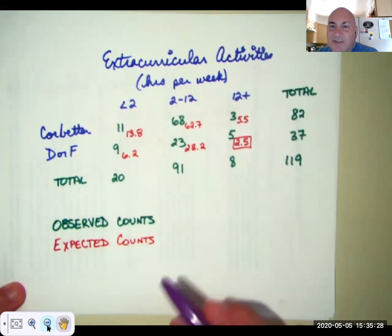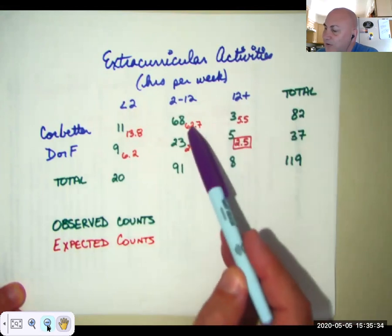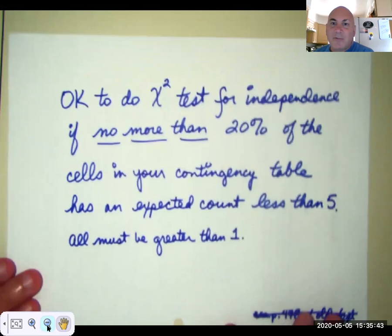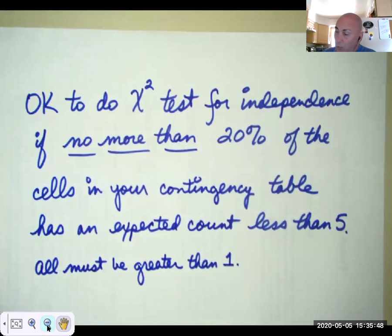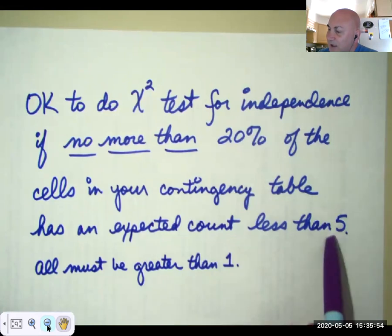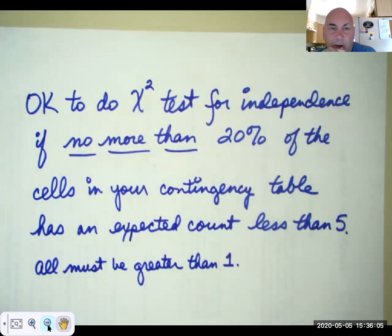Now that you can see that works, you can apply the row total times column total divided by total total formula to get all the other expected values. It's okay to do the chi-squared test for independence if no more than one out of five cells in your contingency table has an expected value less than five, and they're all greater than one. This is one of those rules of thumb that allows us to work within the formal conditions and still get a good result.